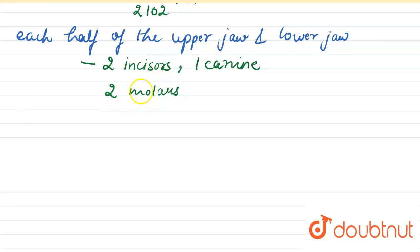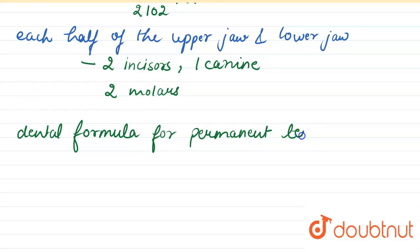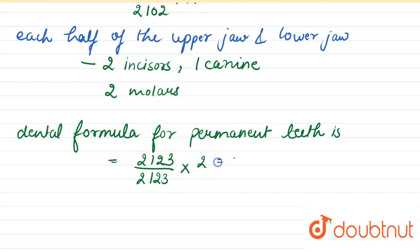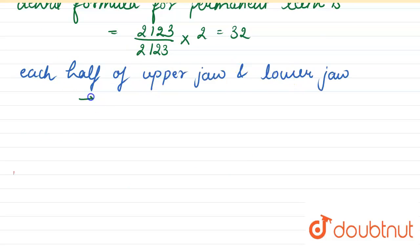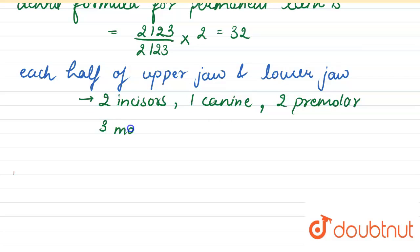The dental formula for permanent teeth is 2123 divided by 2123, multiplied by 2, which equals 32. Each half of the upper jaw and lower jaw has two incisors, one canine, two premolars, and three molars. An adult human has 32 permanent teeth.